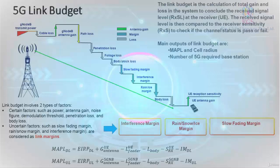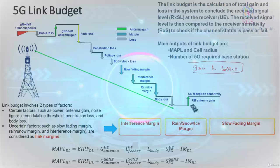Before we start, let me begin with the very basic concept to help you understand what exactly a link budget is. In simple words, a link budget is a mathematical calculation considering all the gains and all the losses incurred in the network. It is a tabulated calculation of all types of gains and all types of losses.